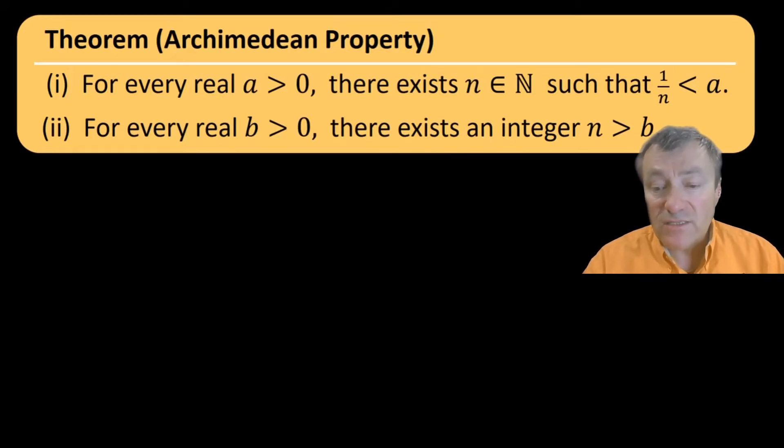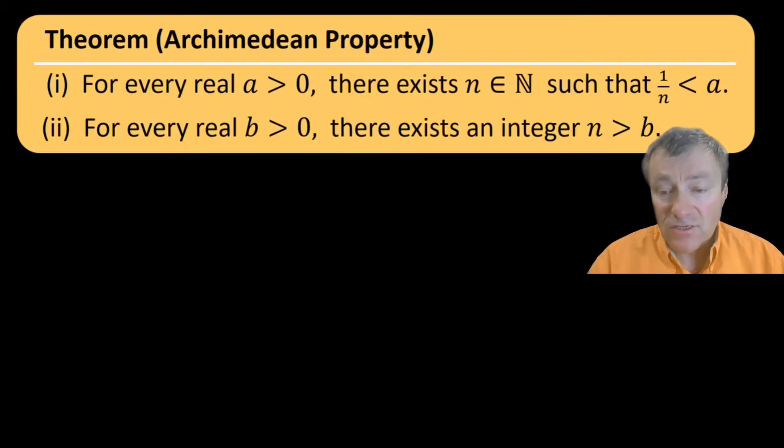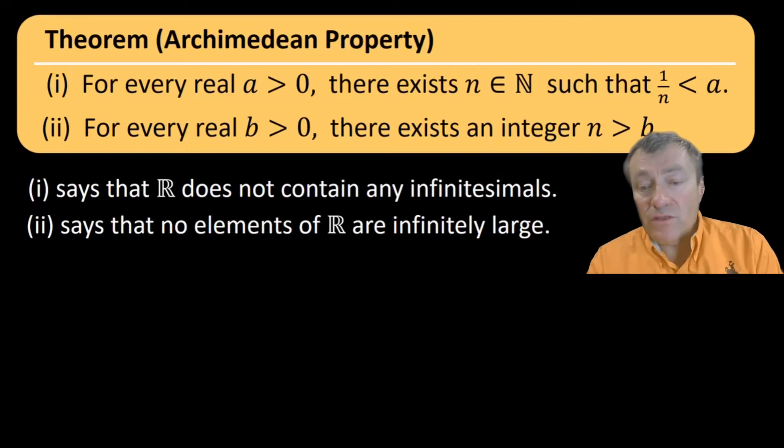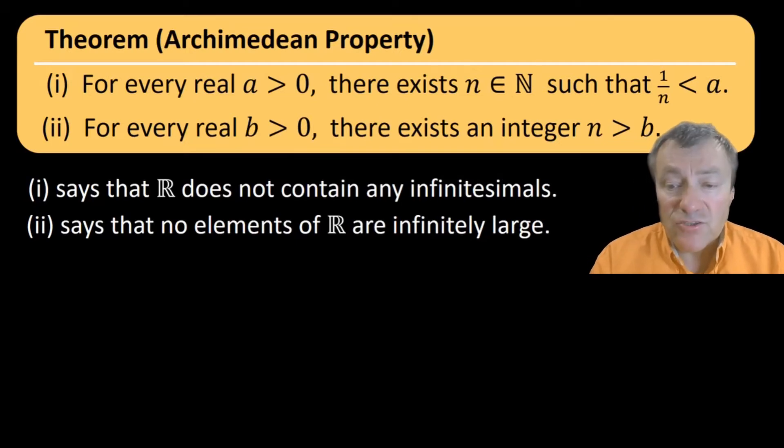And part two says that no matter how far out along the real line you go, you never get past the integers. This second property can be paraphrased by saying that there are no infinitely large real numbers. Now these two forms of the Archimedean property are equivalent. If you prove one, then you have proved the other just by taking one over that.